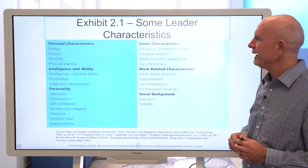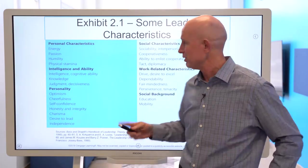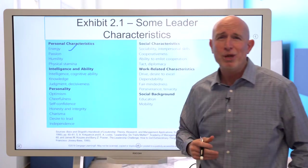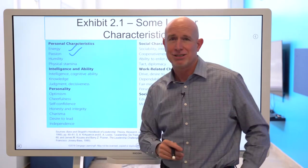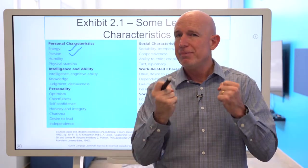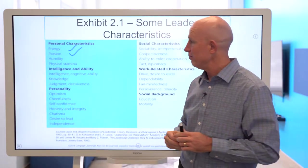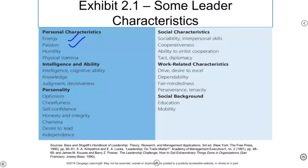When we think about leader characteristics, energy is one — we follow people who are energetic and committed to the task. We also follow those who are passionate about the shared purpose they're embarking on with followers. We look for humility in leaders, and as mentioned previously, leadership hubris can be a tremendous problem. Physical stamina is also key — how do you as an emerging leader build that stamina to endure the ups and downs that are so often part of the leadership journey?